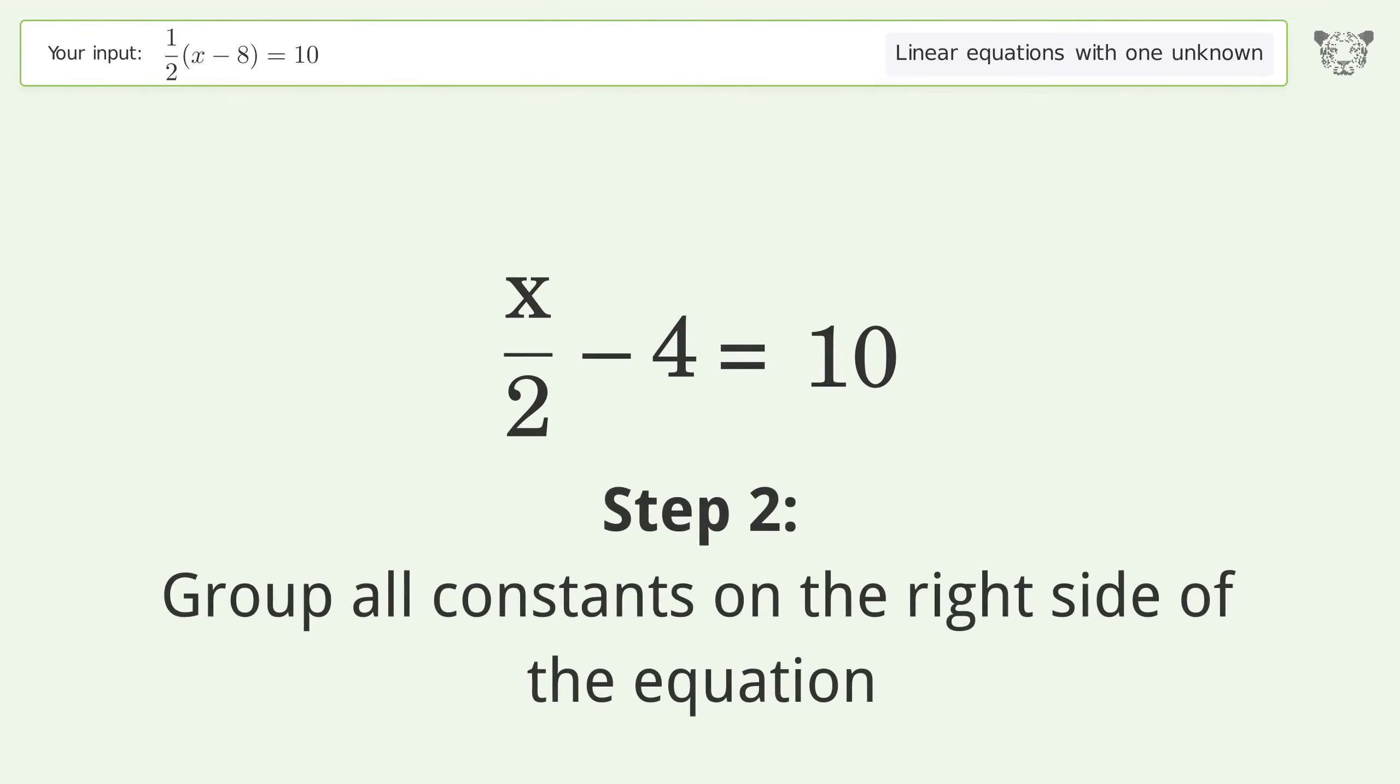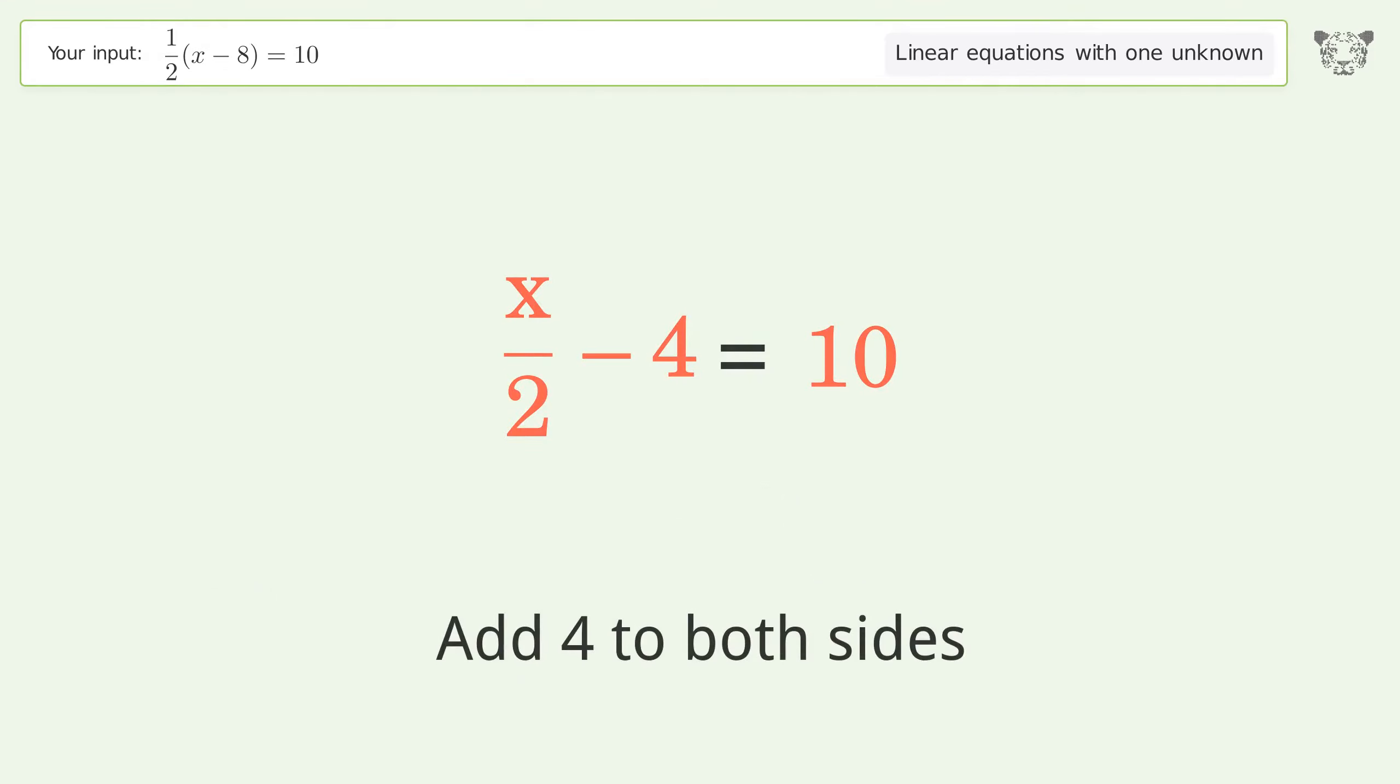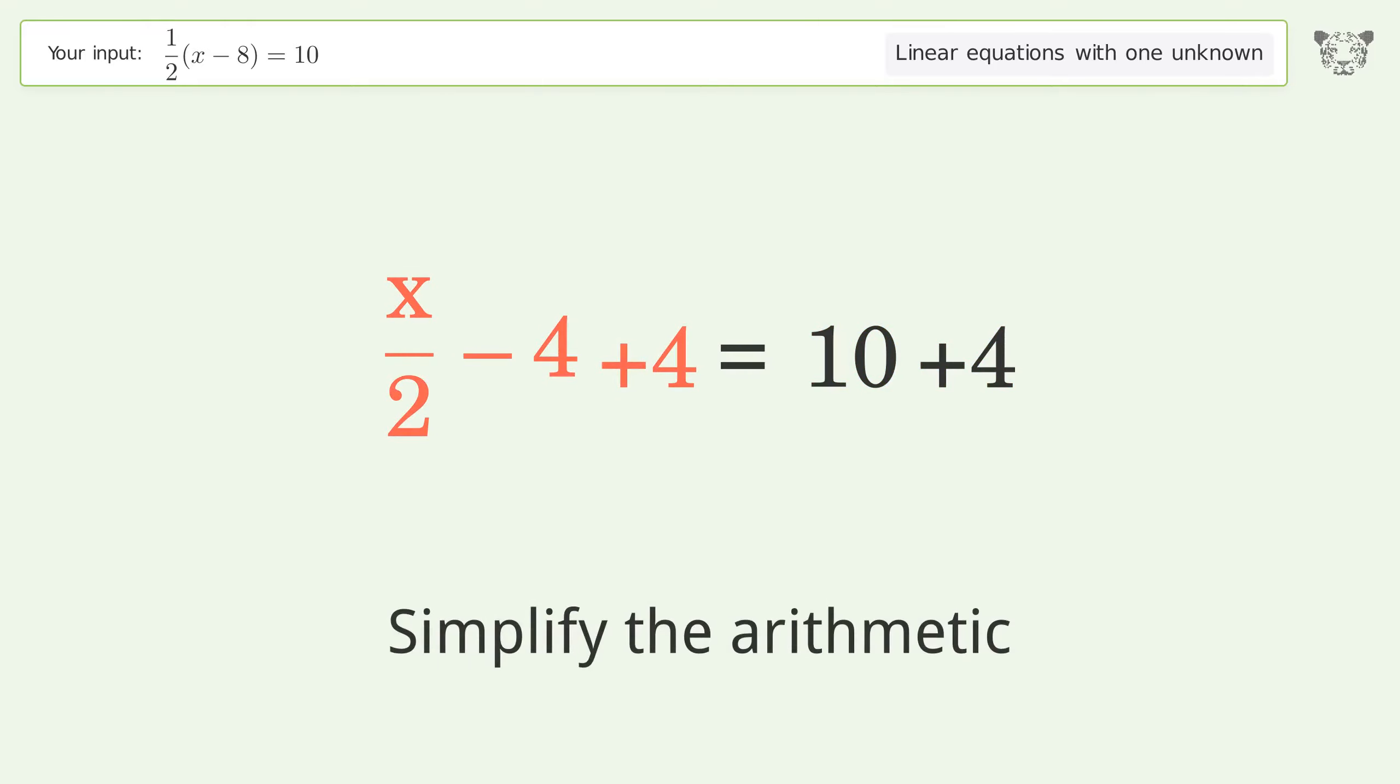Group all constants on the right side of the equation. Add 4 to both sides. Simplify the arithmetic.